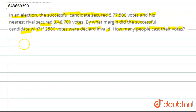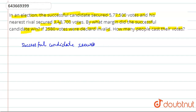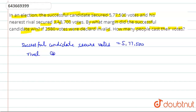We have given that the successful candidate secured votes equal to five lakh seventy-seven thousand five hundred. The rival candidate secured votes equal to three lakh forty-eight thousand seven hundred votes.